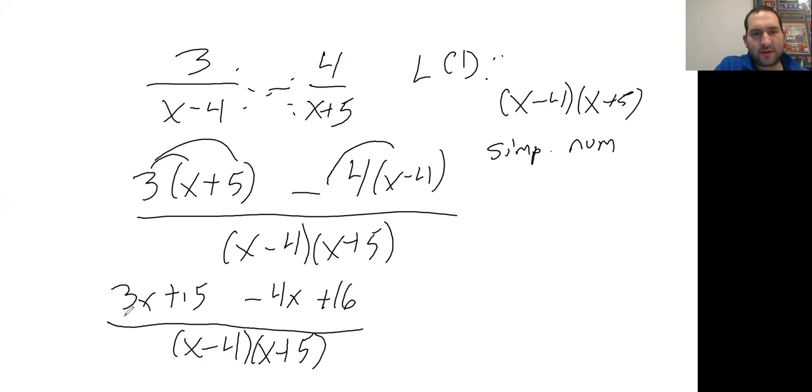Now combine your like terms. 3x - 4x is negative 1x, or just negative x. 15 + 16 would be plus 31, over your LCD of (x-4)(x+5). That would be your final answer.